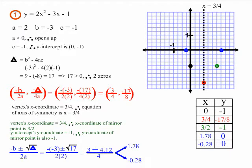There is no need to find any extra points for example 1. Its vertex, its y-intercept and mirror point, and its two zeros give us the five points that we need.